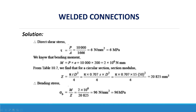The bending moment is M = P × E = 10,000N × 200mm = 2 × 10⁶ N·mm. From the table, for a circular section, the section modulus is Z = πTd²/4 = π × 0.707S × d²/4 = π × 0.707 × 15 × 50² / 4, giving Z = 20,825 mm³.